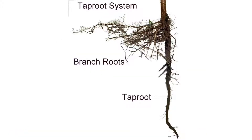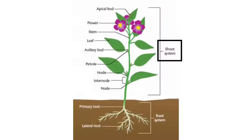The root system includes the plant's underground roots. The shoot system includes the above-ground stems, leaves, and flowers.